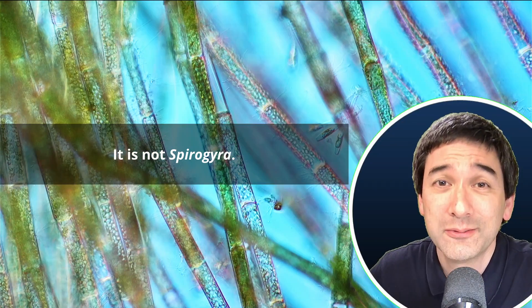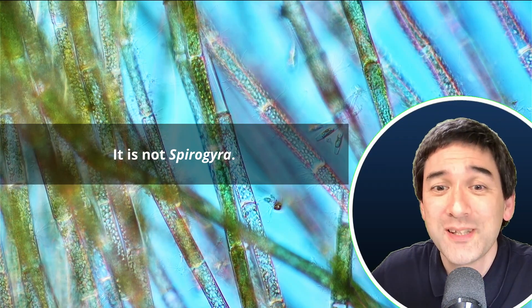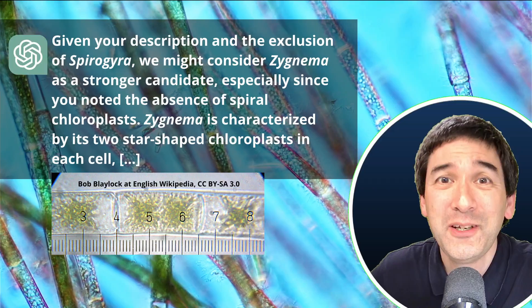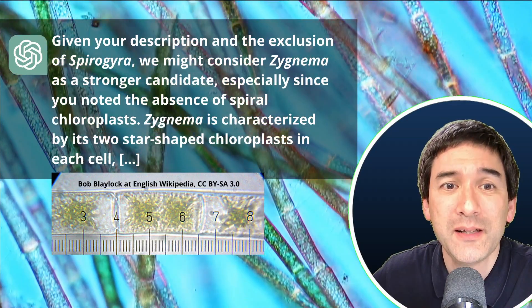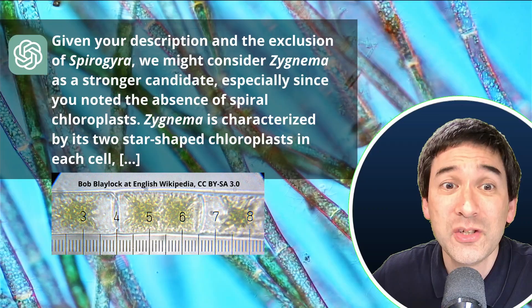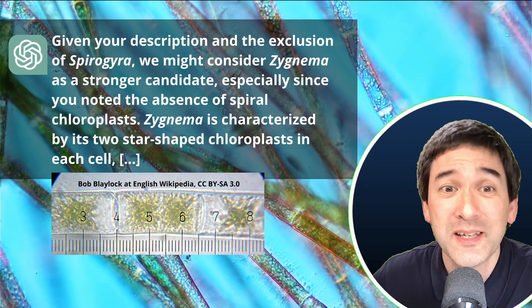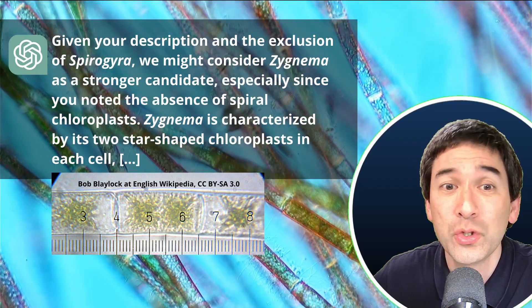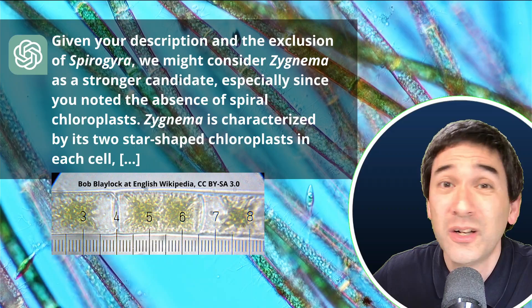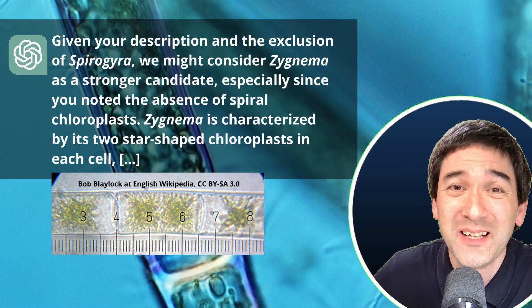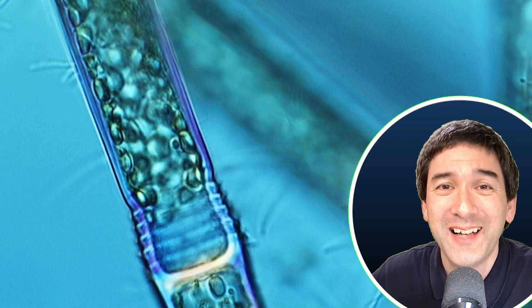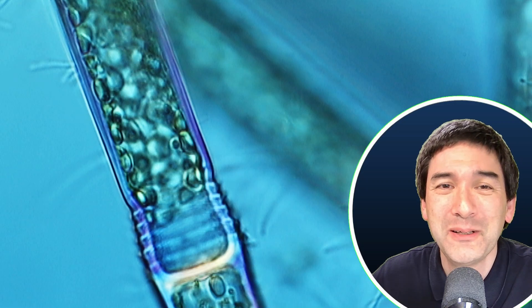So I said it's not spirogyra. And then it kept on suggesting other possibilities here. Given your description and the exclusion of spirogyra, we might consider Zagnima as a stronger candidate, especially since you noted the absence of spiral chloroplasts. Zagnima is characterized by its two star-shaped chloroplasts in each cell. No, that's also not the case. And again, it's completely ignoring those ring-shaped structures. And it suggests another possibility as well.